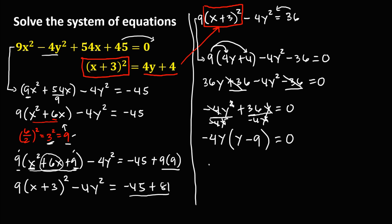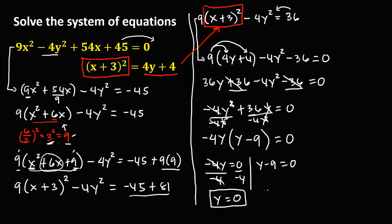To solve for y, equate both factors to zero. So negative 4y equals 0, which gives y equals 0 divided by negative 4, so y equals 0. And y minus 9 equals 0, so y equals positive 9. These are the two values for y.